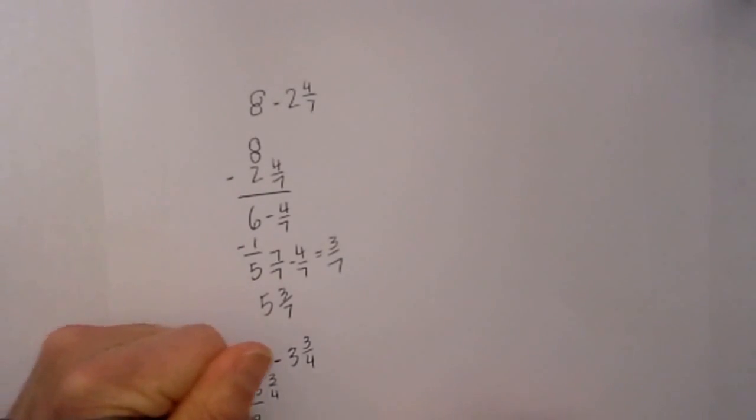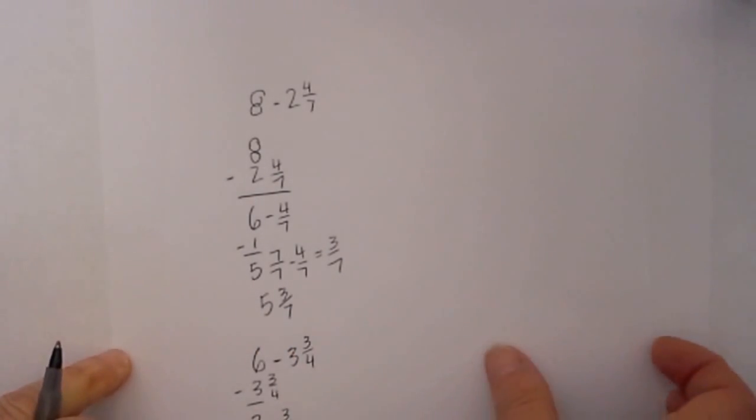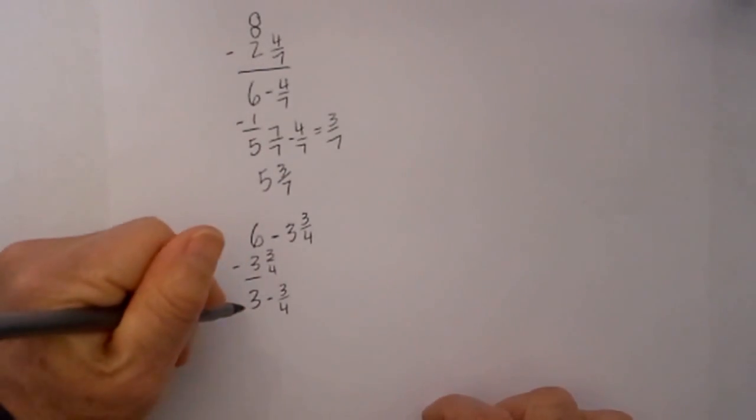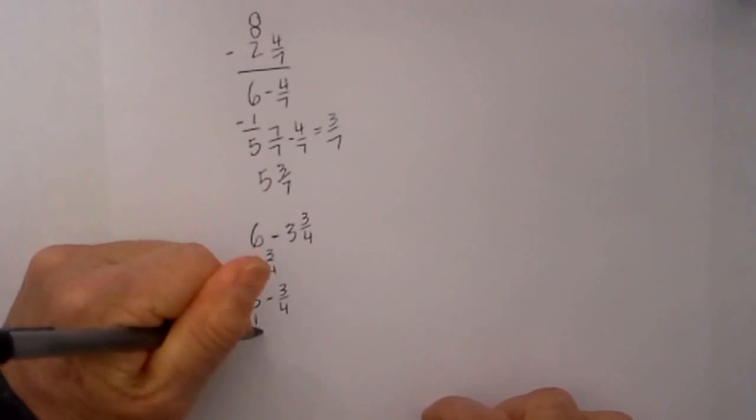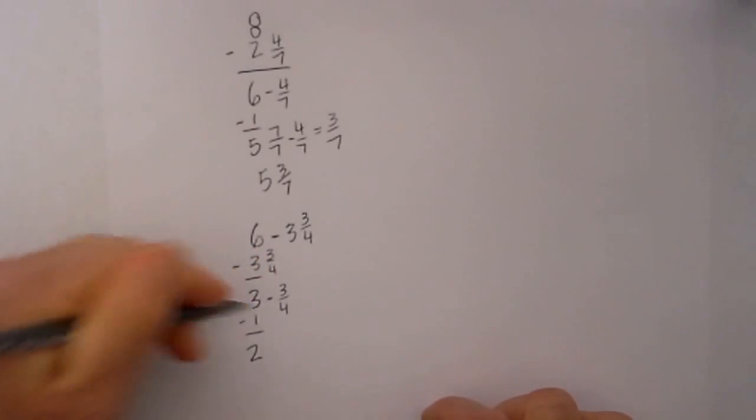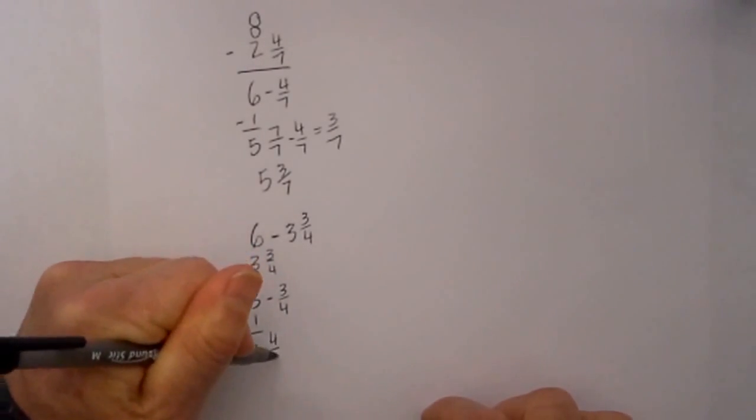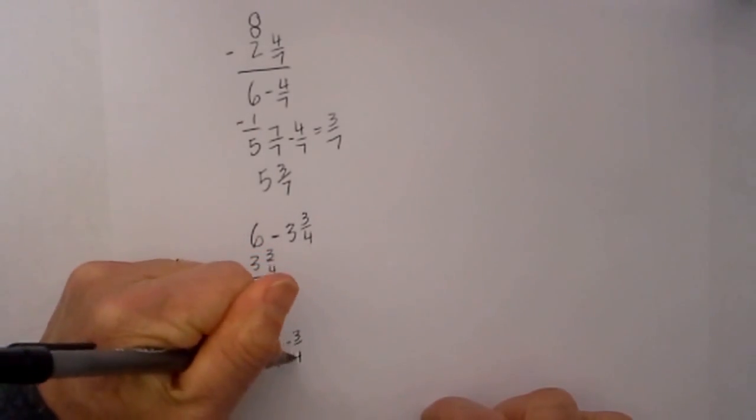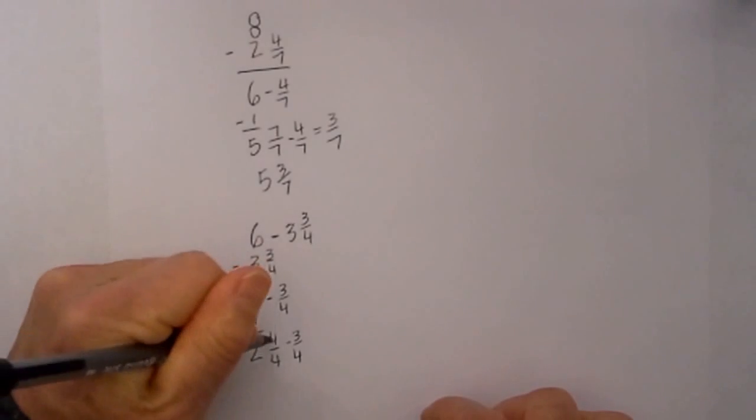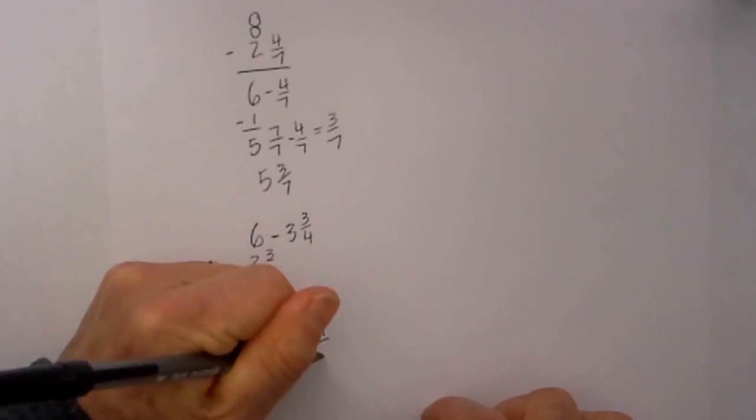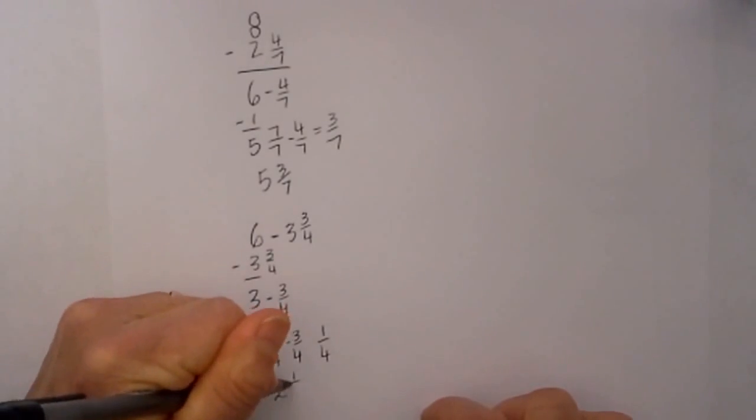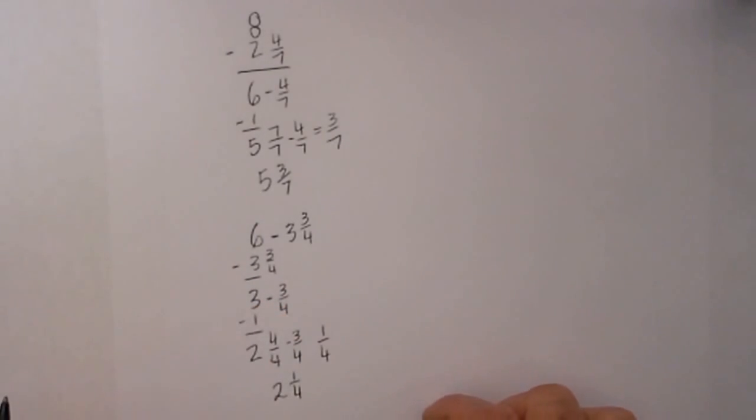Now it becomes 3 minus 3/4. I just complete it the same way as before. I then take 3 minus 1 equals 2. Rewrite the 1 as 4 over 4, getting my clue from the denominator, minus 3/4, which was the original fraction. 4 minus 3 is 1. I can subtract these because they have a common denominator. Bring down the 2, so it becomes 2 and 1/4.